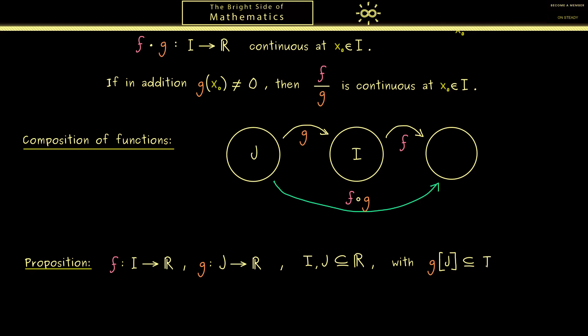This means that the whole range of g, also called the image of J under g, is a subset of I. And you see to denote the image I use brackets here. In our picture this means that g does not map outside of this set here. Of course the range of g could be the whole set I. The important thing is we don't hit anything outside.